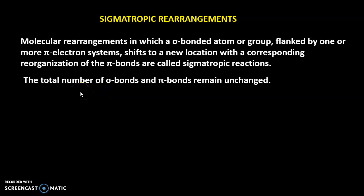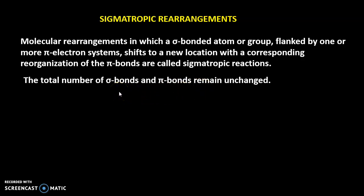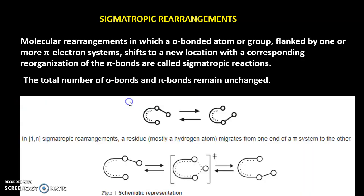An important thing to remember is that the total number of sigma bonds and pi bonds remains unchanged. That means the number of sigma bonds and pi bonds in the starting material equals the number in the product. We will see some schematic representations so that you will understand what sigmatropic rearrangement is — this is just a pictorial representation, not an actual reaction.